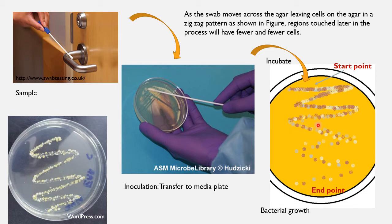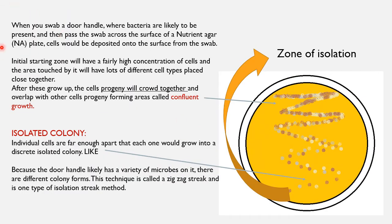As you move further, the cells being deposited get diluted, so the number of colonies reduces. That is the reason you get isolated colonies toward the endpoint. On the actual plate, the colonies are well crowded at the start. For example, when you swab a door handle where bacteria are present and press the swab across nutrient agar, cells are deposited from the swab. The initial starting zone has a fairly high concentration of cells.